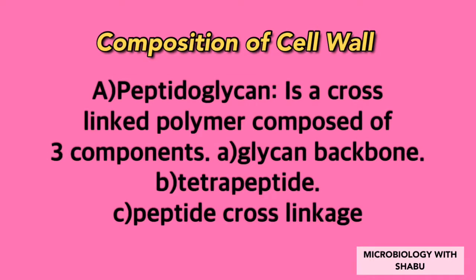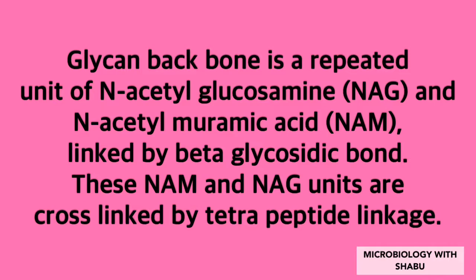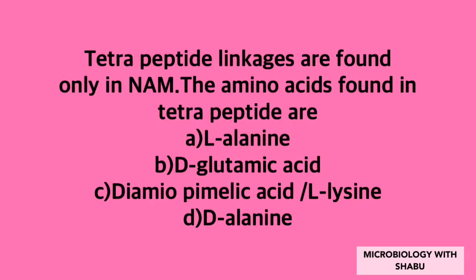Peptidoglycan is a cross-linked polymer composed of three components: (a) glycan backbone, (b) tetrapeptide, (c) peptide cross-linkage. The glycan backbone is a repeated unit of N-acetylglucosamine and N-acetylmuramic acid linked by beta-glycosidic bonds. These units are cross-linked by tetrapeptide linkages. The amino acids in the tetrapeptide are: L-alanine, D-glutamic acid, diaminopimelic acid or L-lysine, and D-alanine.